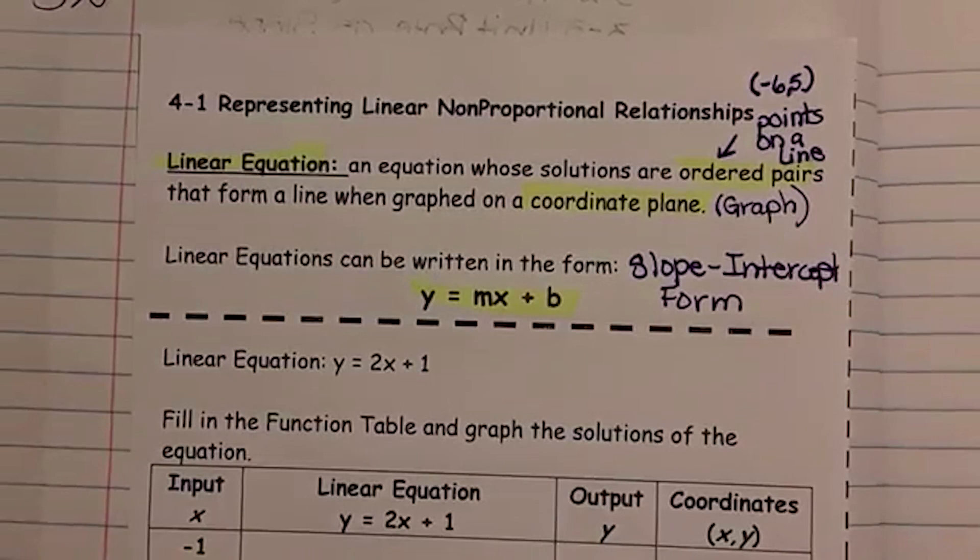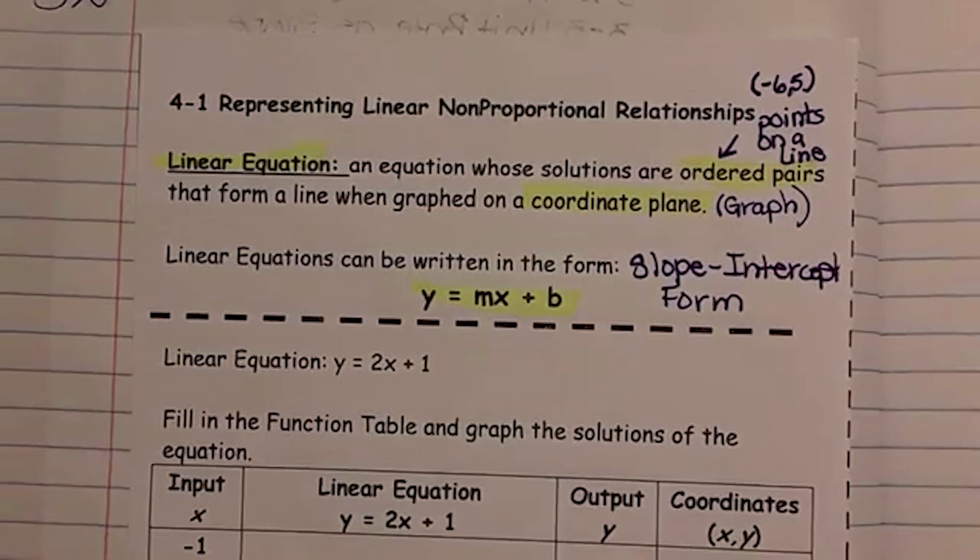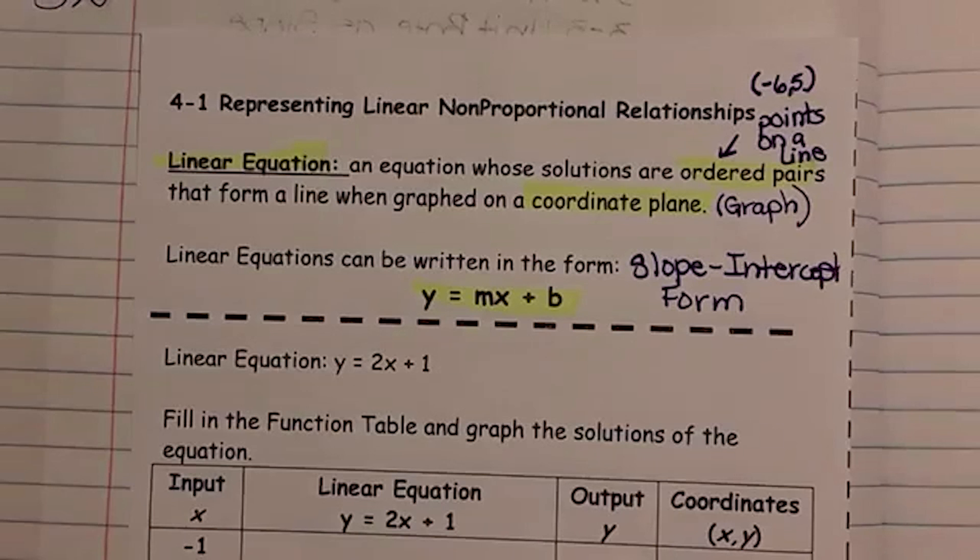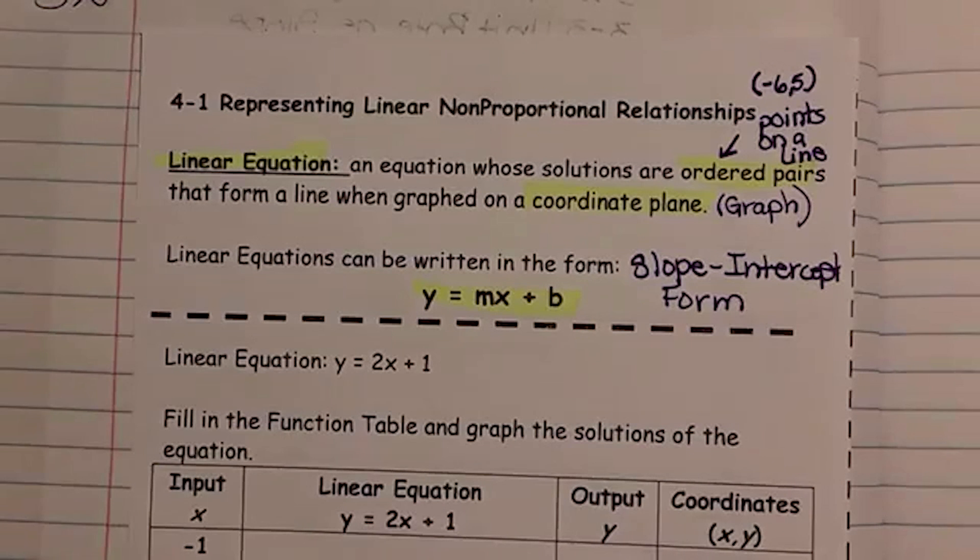Our m we've talked about, which is the slope. And the b is the y-intercept. This is where the line is going to cross through your y-axis. And we'll talk more about that in section 4-2.